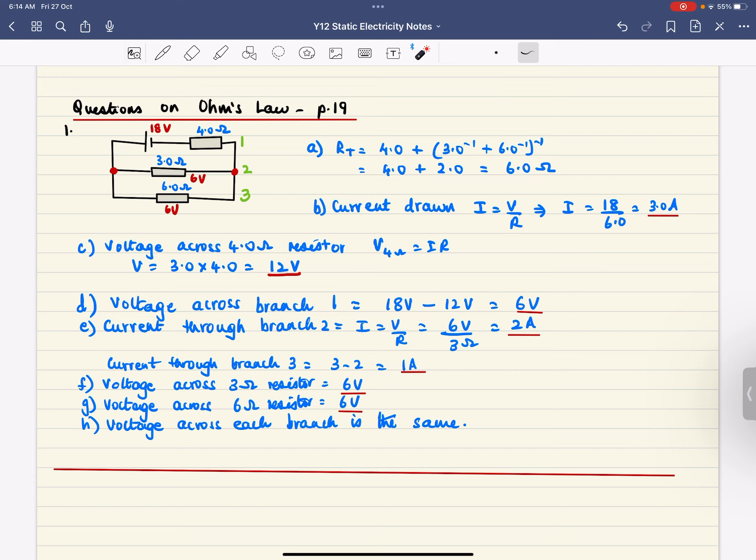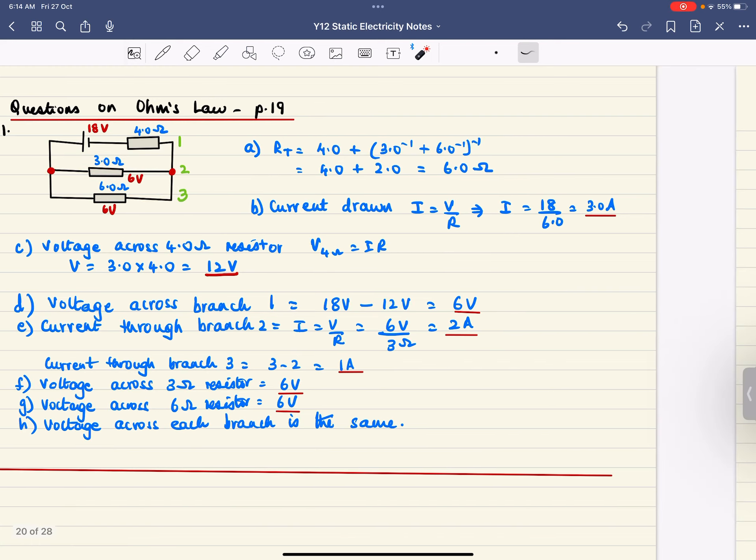And the voltage across this top branch is the same as all the other branches. So in order to get the voltage across the top branch, you need to subtract the voltage across that. So which is the total circuit current times the 4, and you get 4 times 3 is 12. So 18 minus 12 is the voltage across all those branches. And that's essentially what you need to know for Year 12.